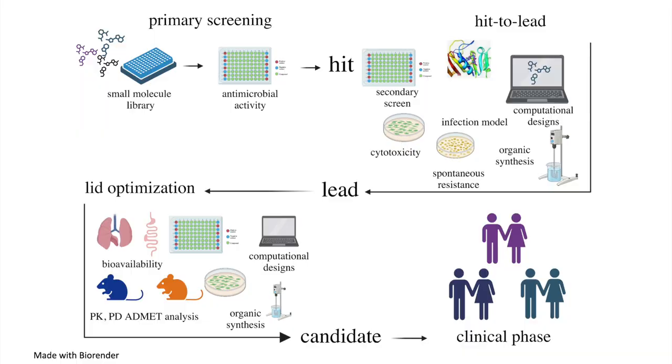And that's what happens. So that makes us microbiologists to be working all the time in antibiotic discovery. And here I'm showing you a basic pipeline of antibiotic discovery that starts with the primary screening, which is testing many, many, many compounds against bacteria to see which ones are active and which ones are not. The ones that are active are called hits.